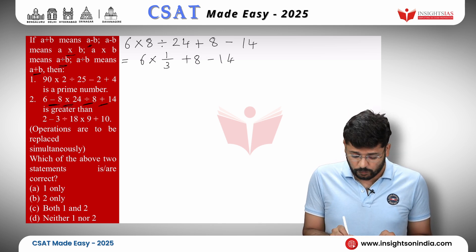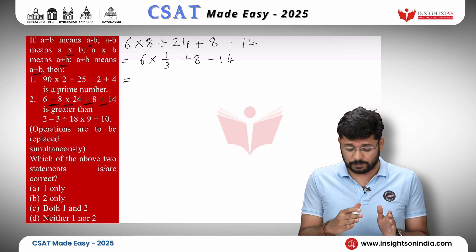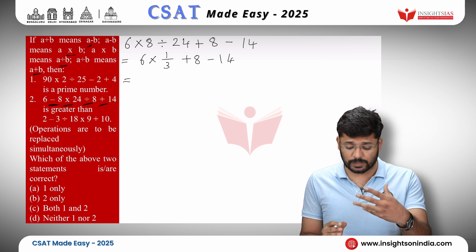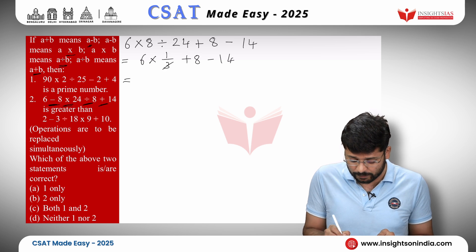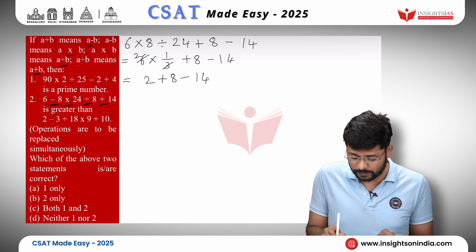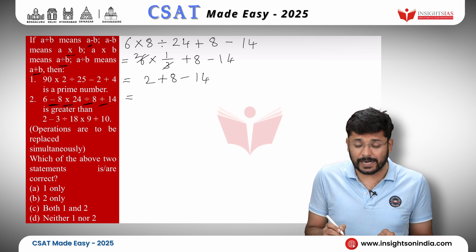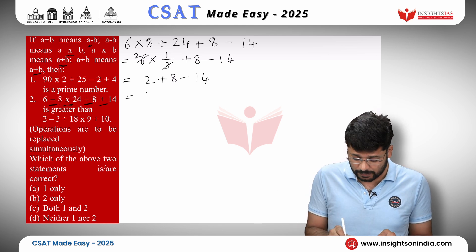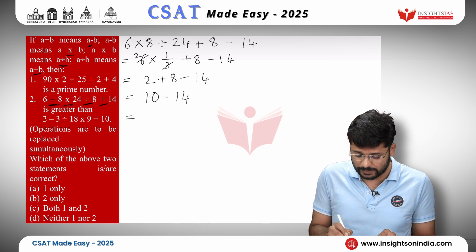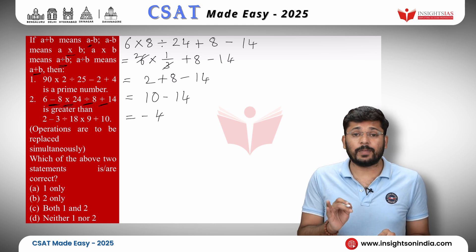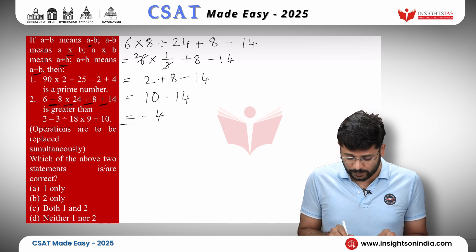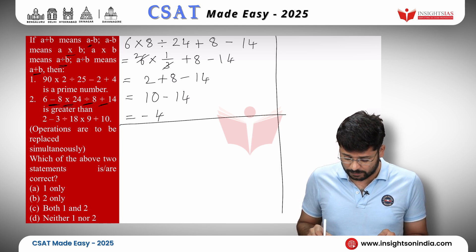Next, BODMAS asks us to do multiplication: 6 into 1 by 3 gives 2, so we have 2 plus 8 minus 14. Then addition: 2 plus 8 gives 10 minus 14. Subtraction is last: 10 minus 14 gives minus 4. So the value of the first expression is minus 4.